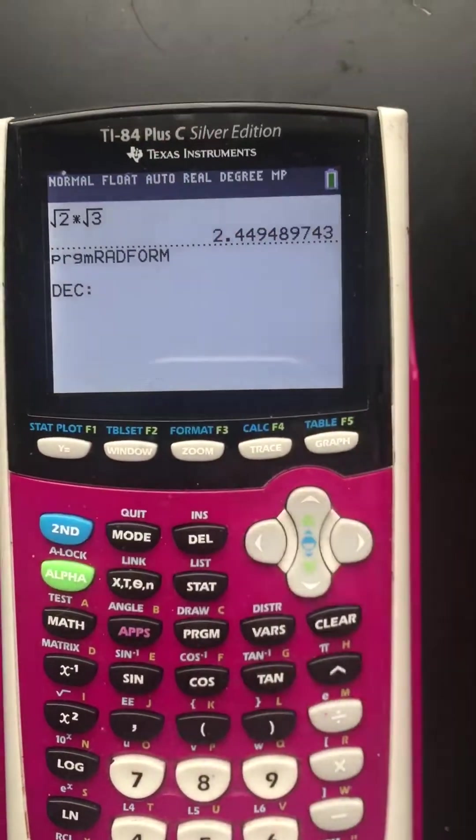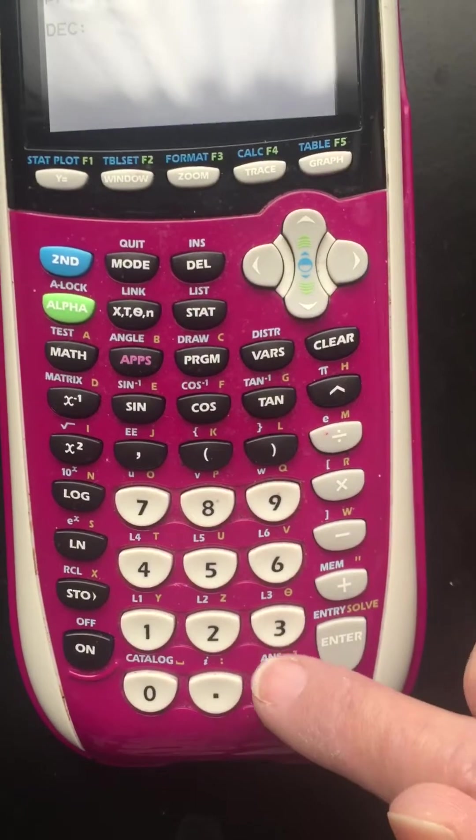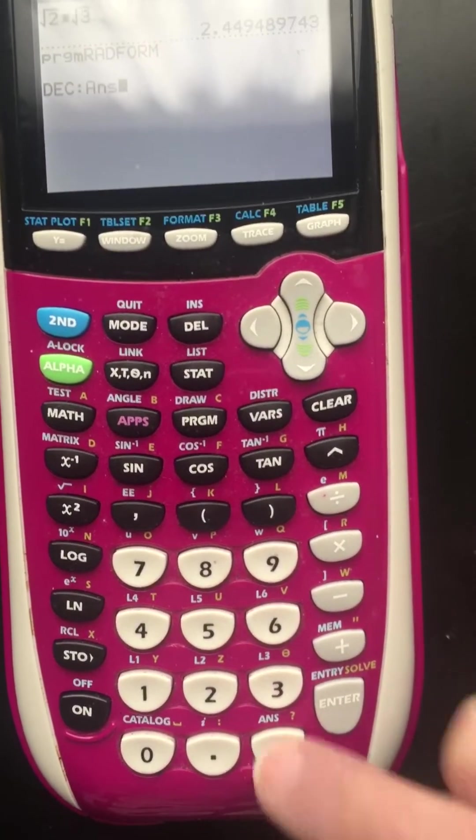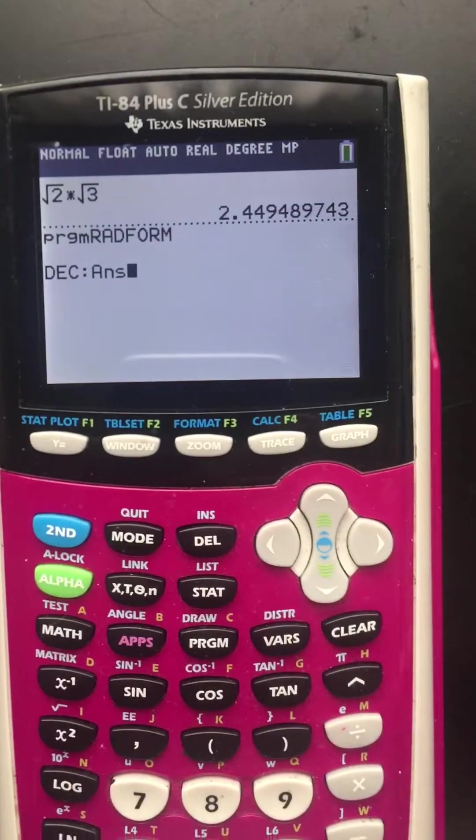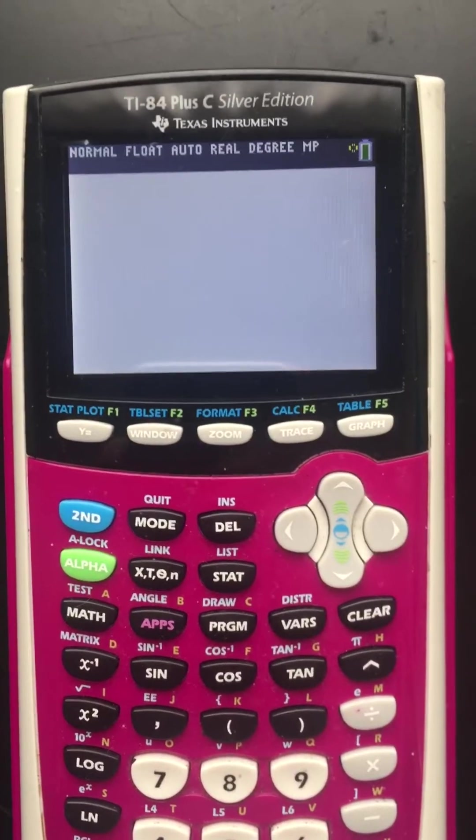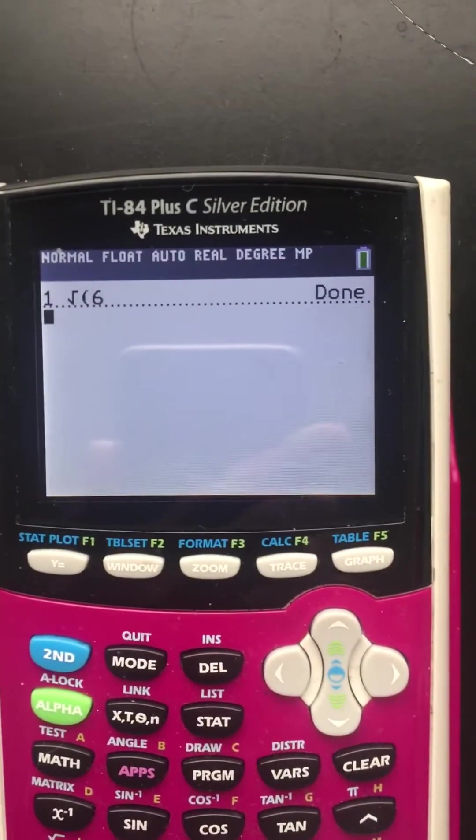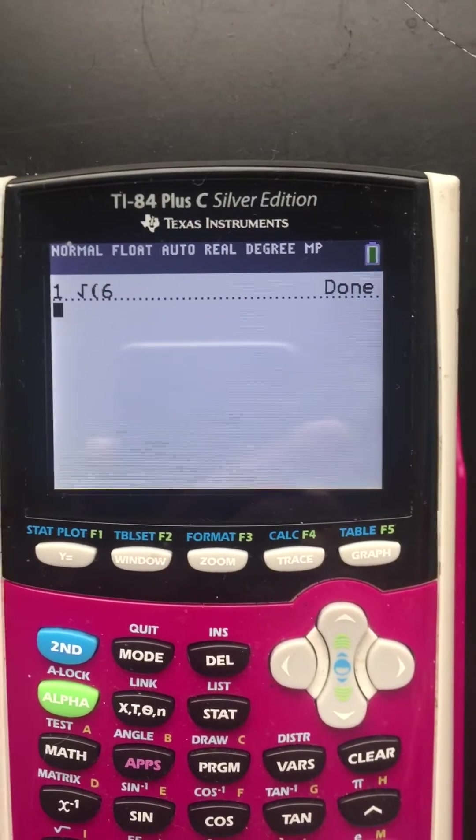But that's what you do. So what you want to do is you want to hit second and then go down here to the minus. And do you see how it has answer painted on there? So that calls up the answer. I hit enter. And there's the answer, the square root of six.